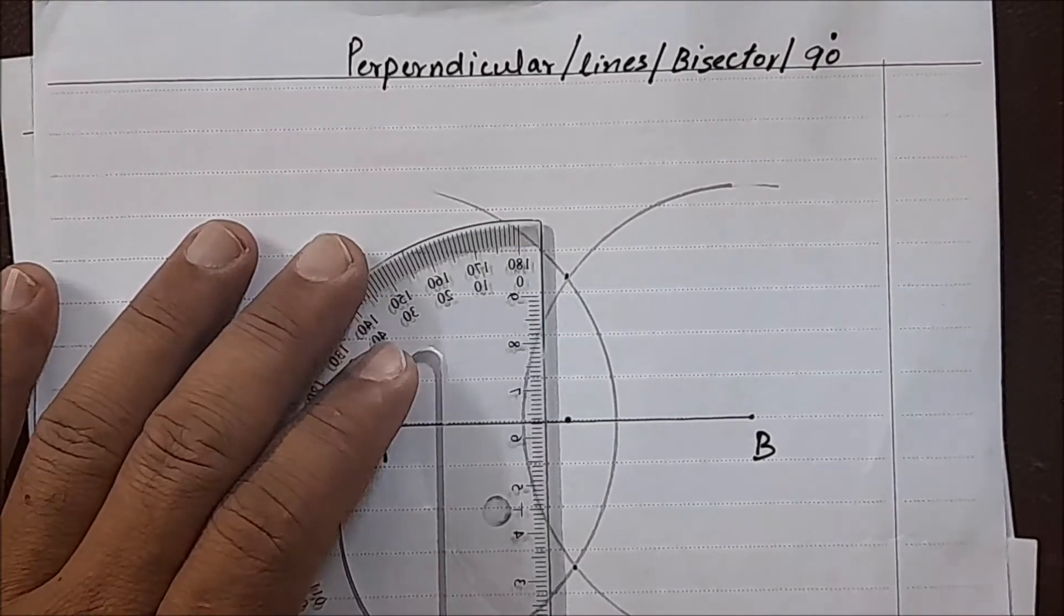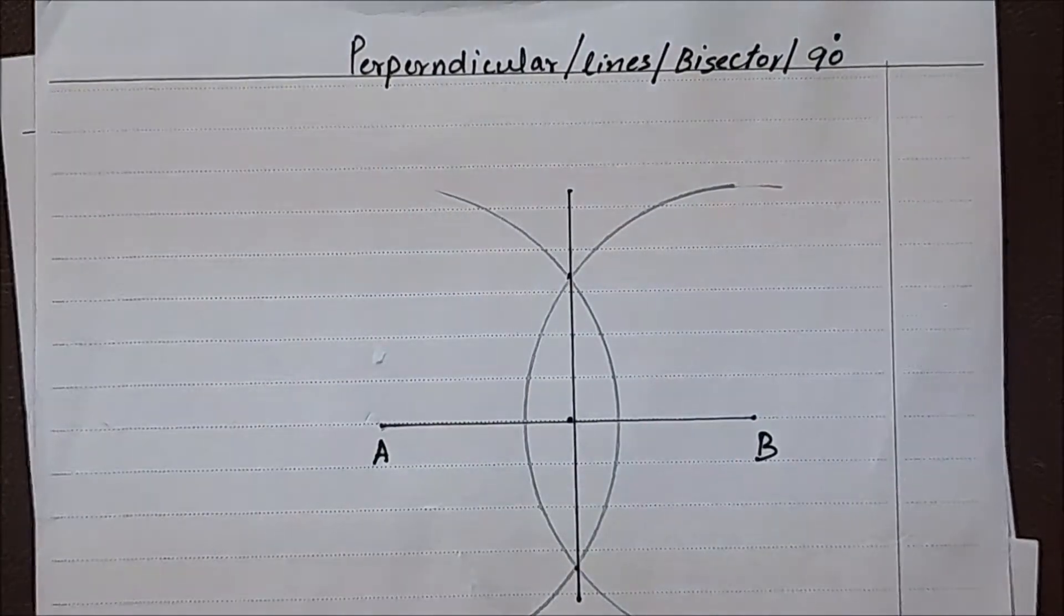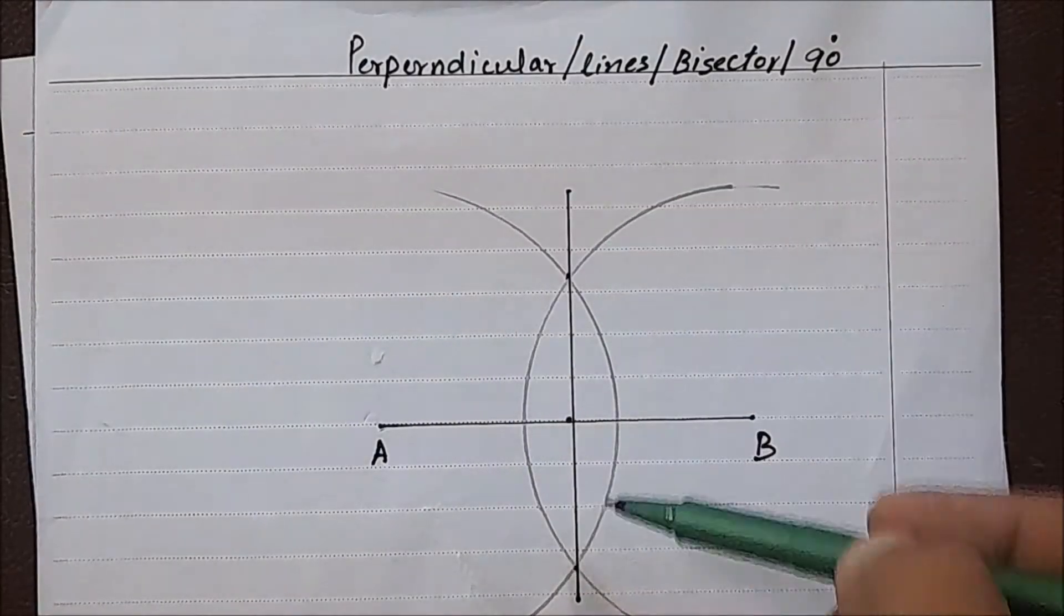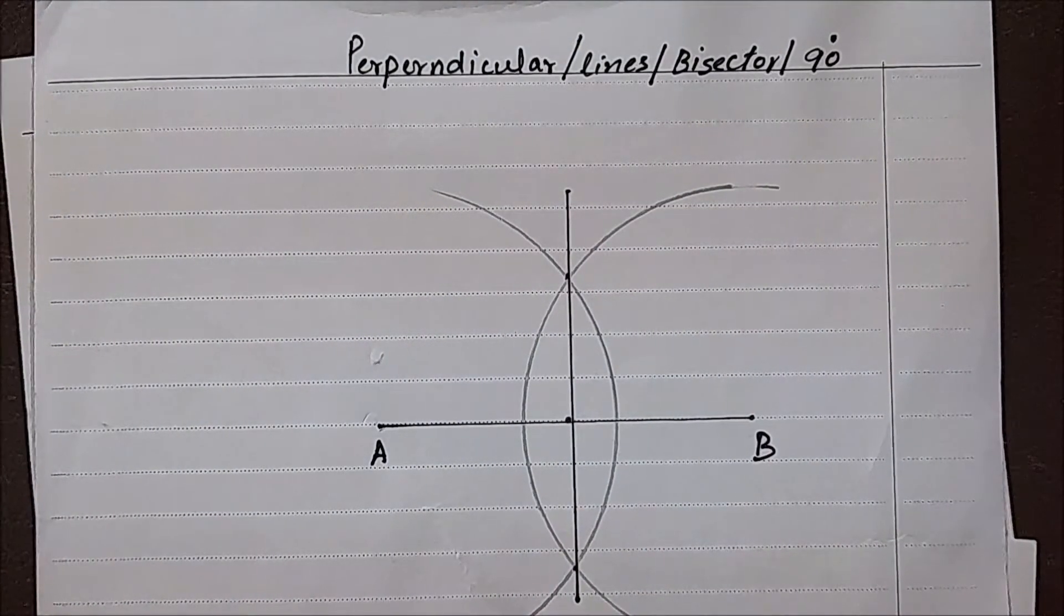As you saw, we created a perpendicular bisector. You can call it a perpendicular line.